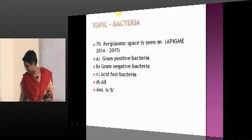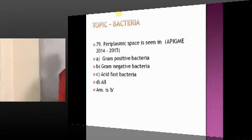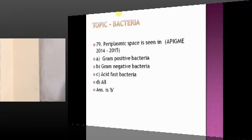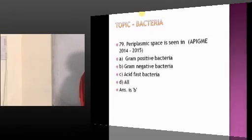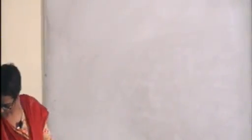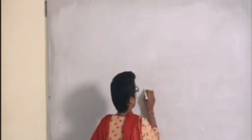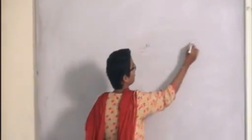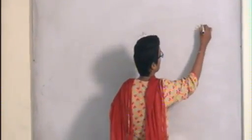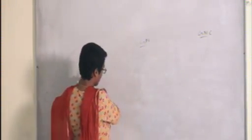Bacterial cell wall — I'll draw and cover the important things related to bacterial cell wall. Gram positive cell wall and gram negative cell wall — so first, gram positive cell wall.